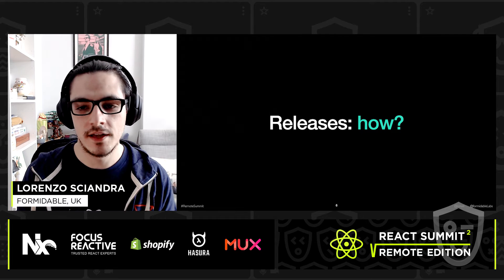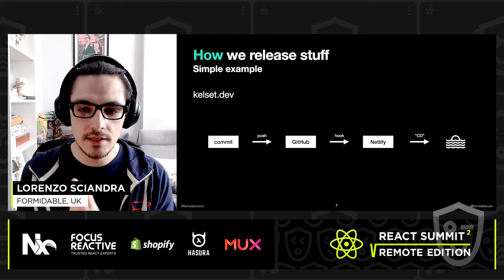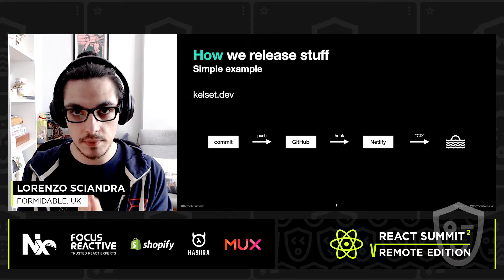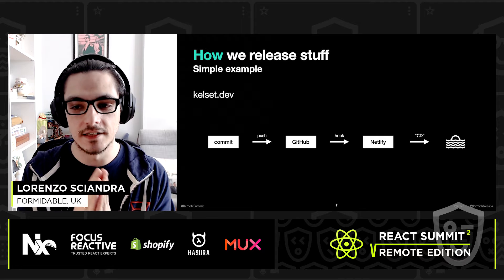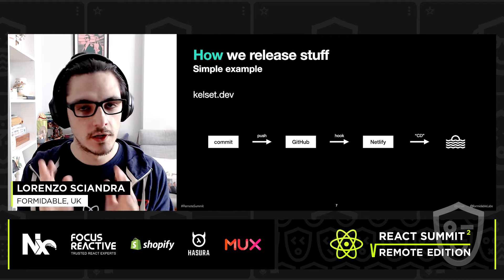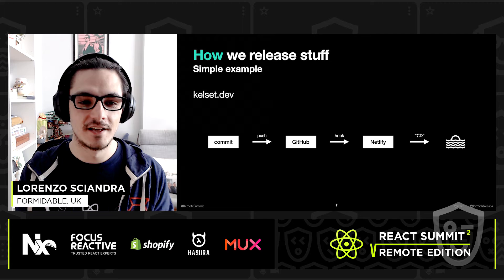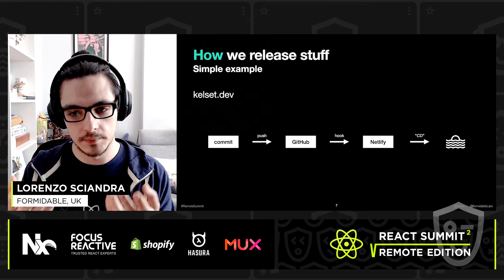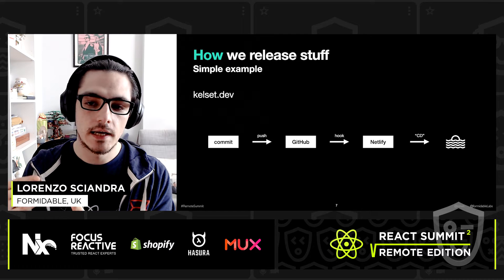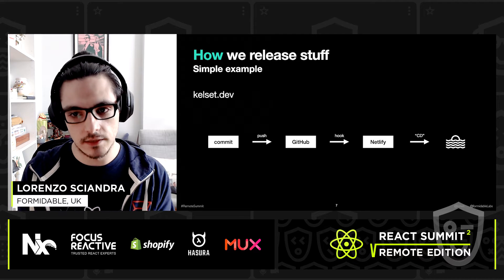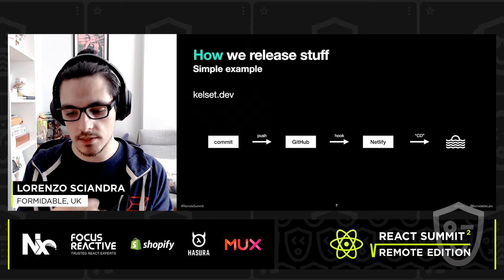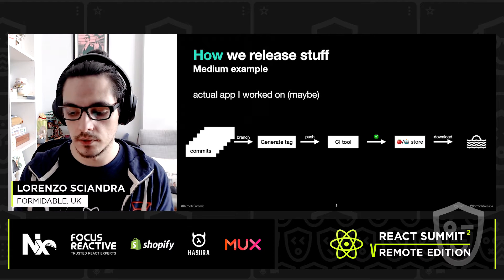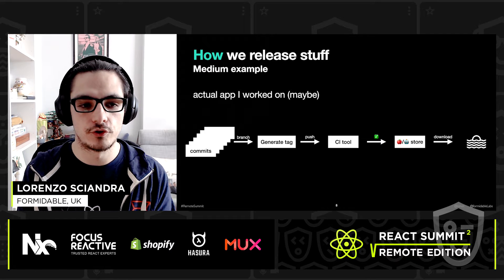How do we release? To tackle this question, let's go through some examples. Starting with a simple one: calsat.dev is my website — it's awful, please don't go look at it. The way I release it is: I do a commit, push it up on GitHub, a git hook gets triggered, Netlify does its magic, and the code is out there — released and drives into the sunset.